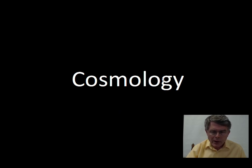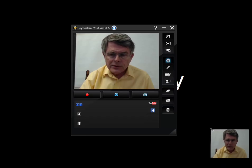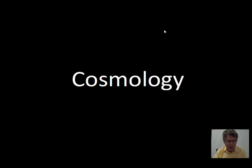Talking about cosmology — our overall view of the universe — and taking a look at some terms that cosmologists would use: a homogeneous universe that looks the same everywhere, and isotropic, that looks the same in every direction. We'll talk a little bit about curvature, the center of the universe, and the cosmological principle.